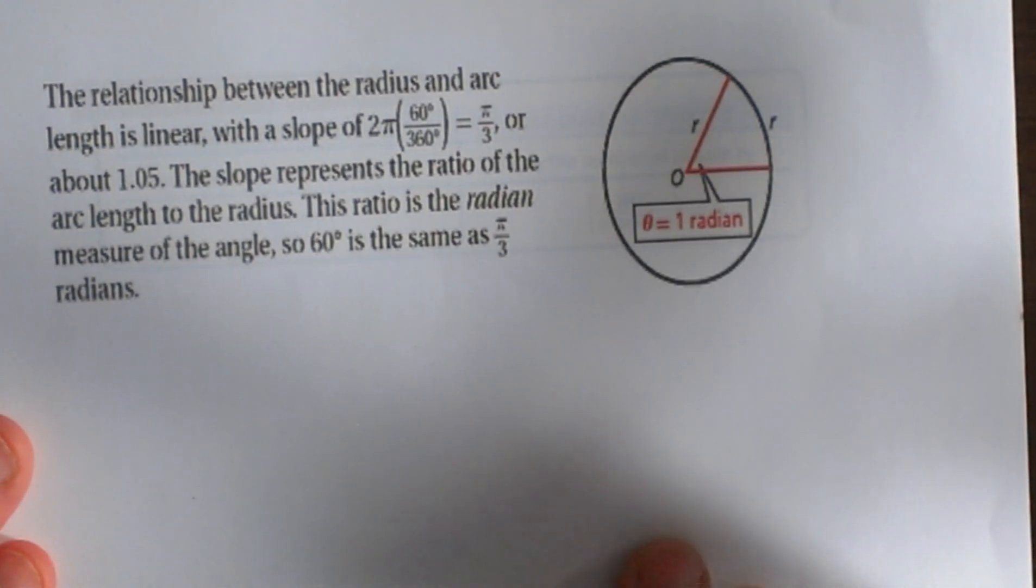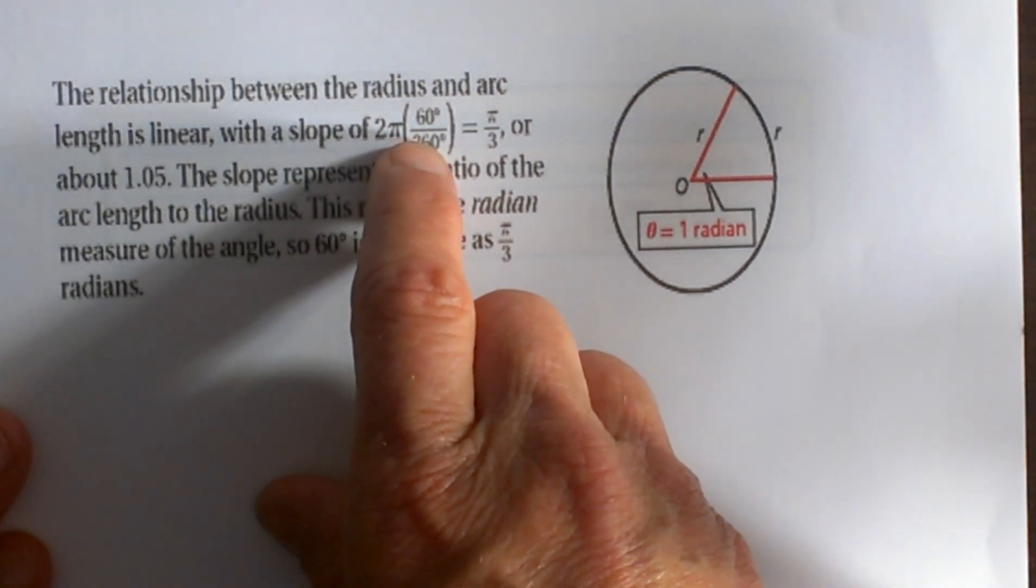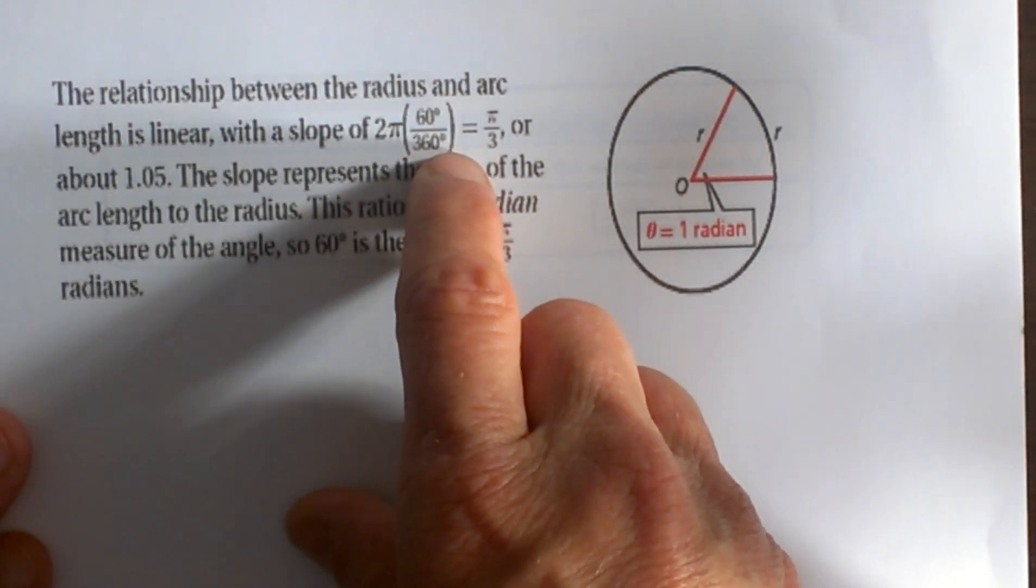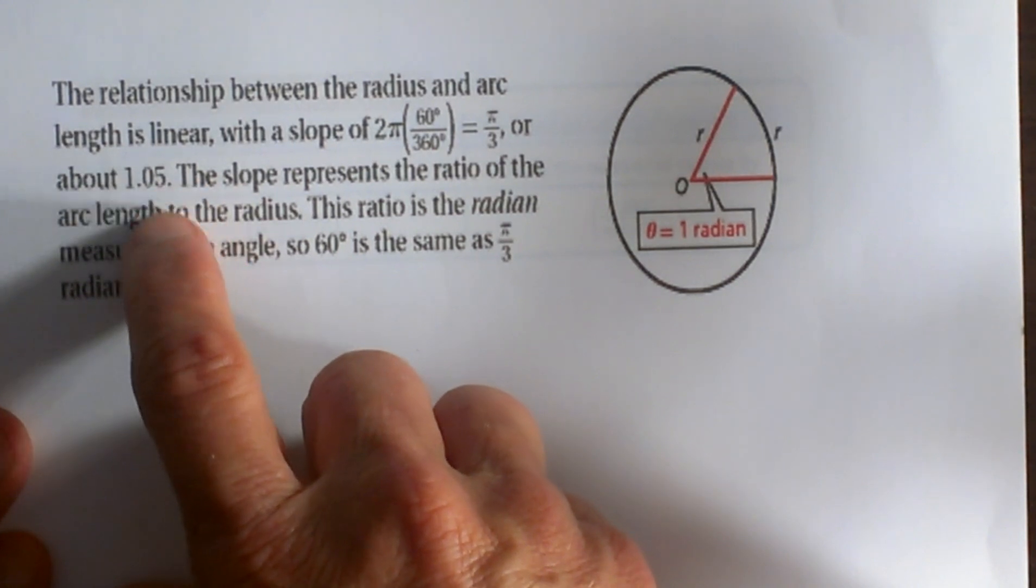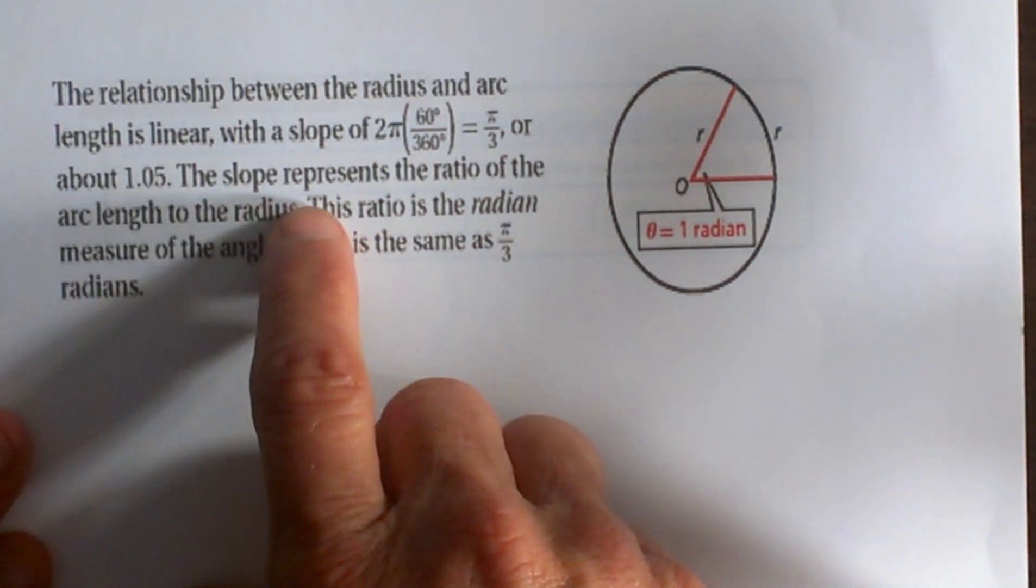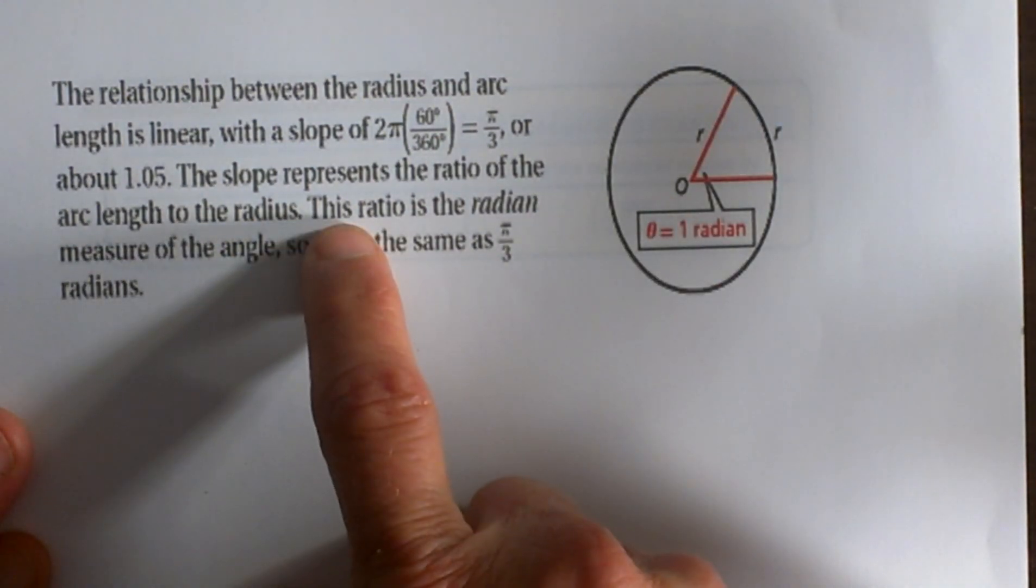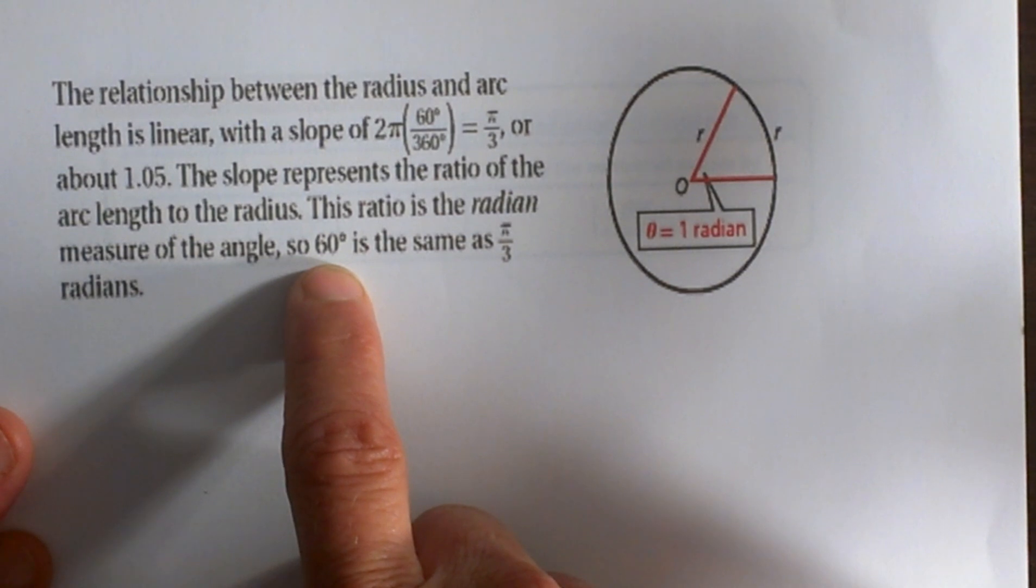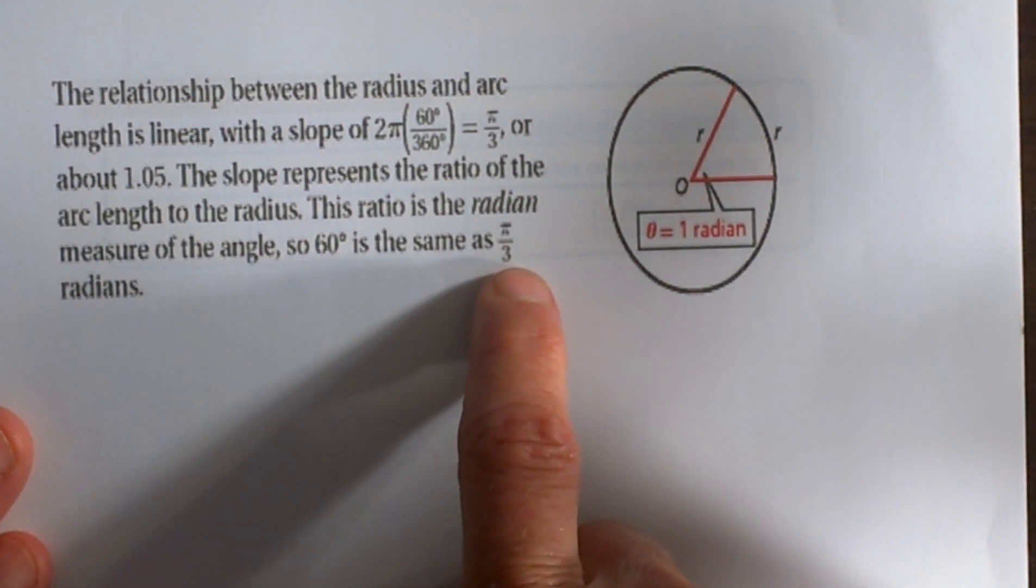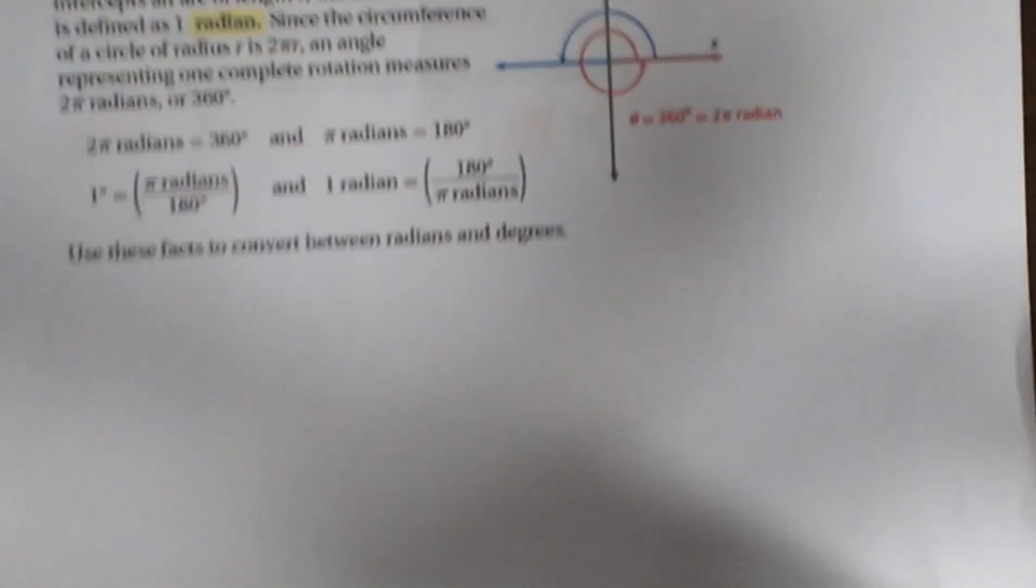The relationship between the radius and the arc length is linear and has a slope of 2π times 60 over 360, which is π/3. If you take π and divide it by 3, you get a slope a little bit larger than 1, which is 1.05. The slope represents the ratio of the arc length to the radius. This ratio is the radian length of an angle. So 60 degrees has a radian measure of π/3 radians.